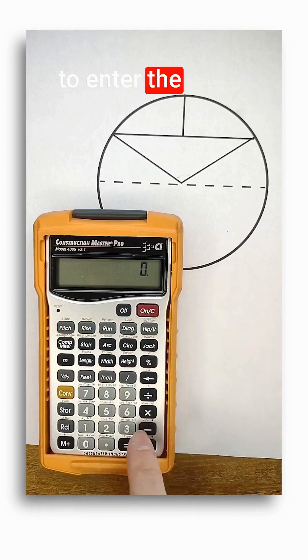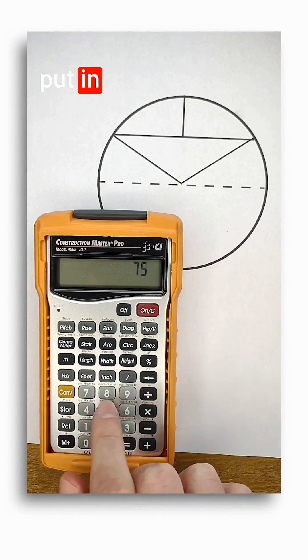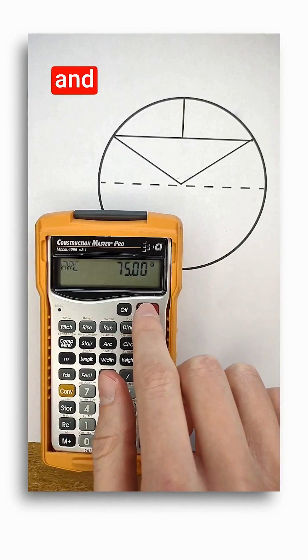If instead I wanted to enter the arc's angle, I would just put in a value without a unit of length and then push arc.